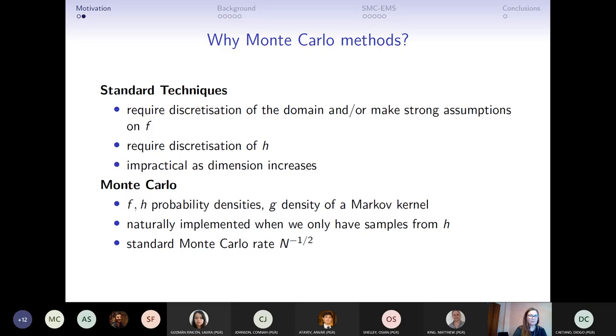On the other hand, Monte Carlo methods, which is what we're going to try to use to solve this problem, make weaker assumptions. The first one is that all the objects we look at f, h and g are probability densities. These might seem even more restrictive than piecewise constant, but actually almost all the applications people care about have f, h and g positive functions, and then we can just renormalize and we obtain densities. Because we use densities and Monte Carlo methods, we can easily deal with the case in which we don't actually know h but we have observations. And then with respect to the dimension, it is well known that the Monte Carlo algorithms scale with a rate of 1 over square root of n, where n is the number of samples that we have. And so they tend to work better as the dimension increases.